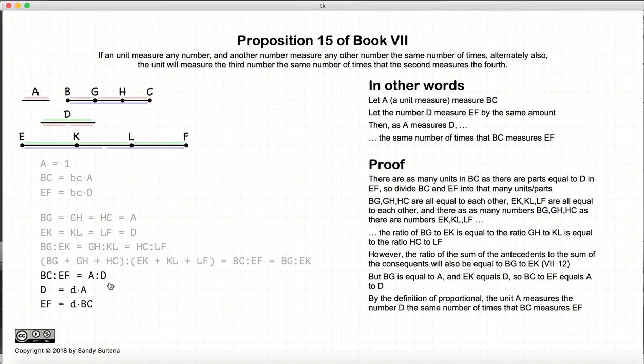Now by the definition of proportion, if BC to EF is equal to A to D, by the actual definition of proportional, that means that A measures D the same number of times that BC measures EF. Remember, that is the definition of proportional. So we're left with this relationship, which is what we were trying to prove all along, is that A measures D the same number of times that BC measures EF.